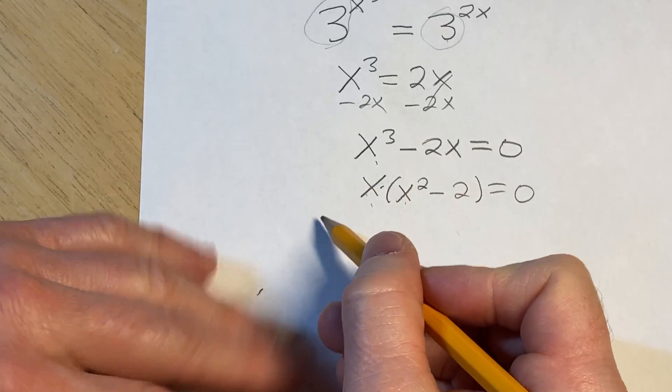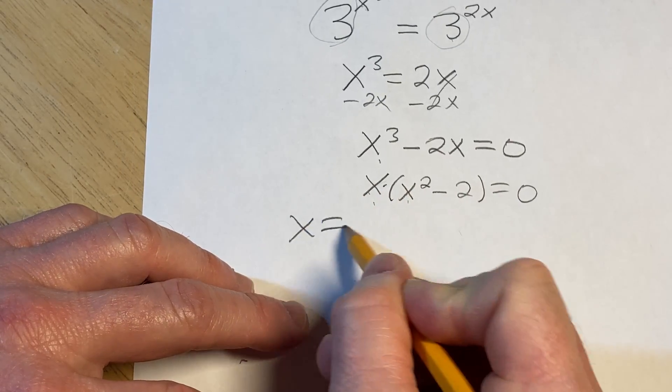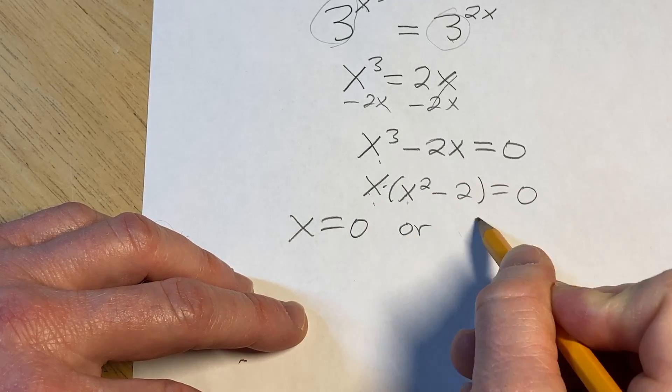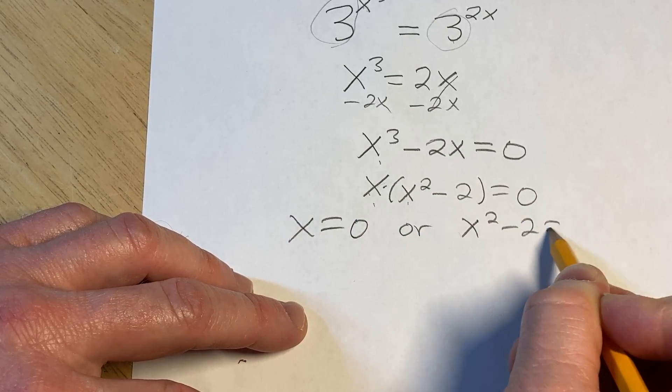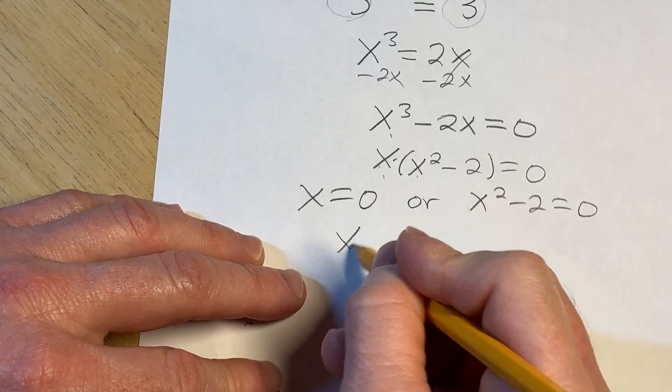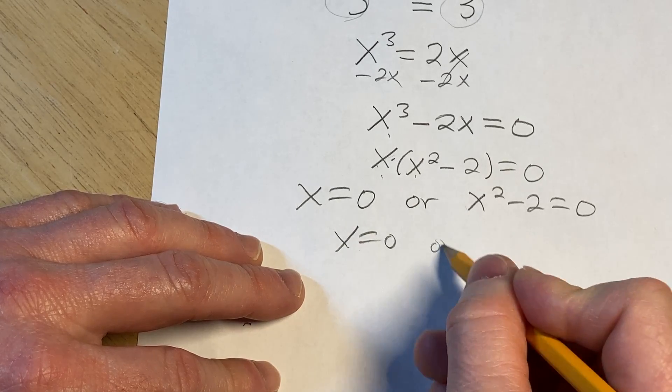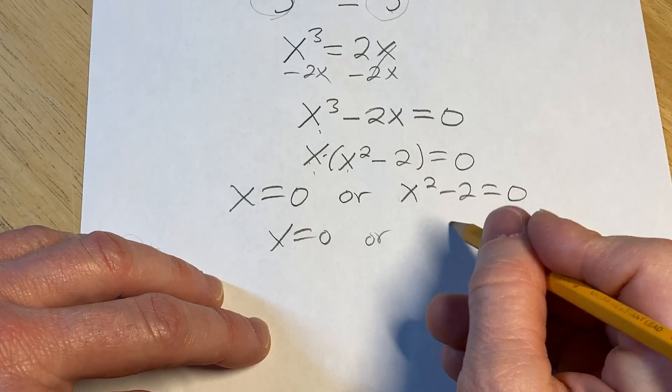You have a product equal to 0, so you can set each factor equal to 0. So we have x equals 0, or x squared minus 2 equals 0. So we have x equals 0, or we can add the 2 here, so we get x squared equals 2.